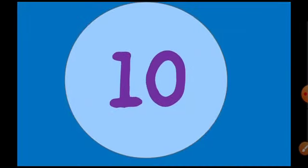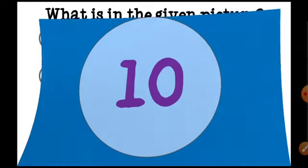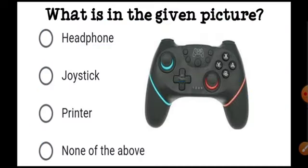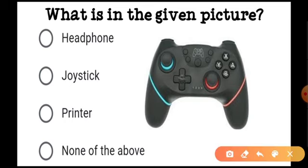Question number 10: What is in the given picture? Options: Headphone, Joystick, Printer, None of the above. Answer is Joystick.